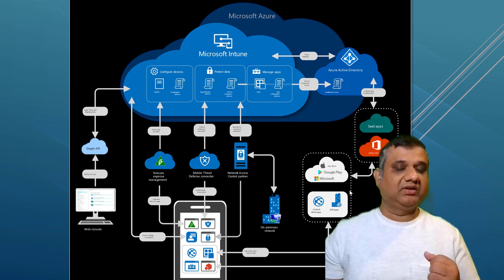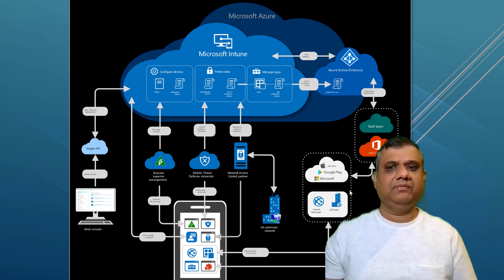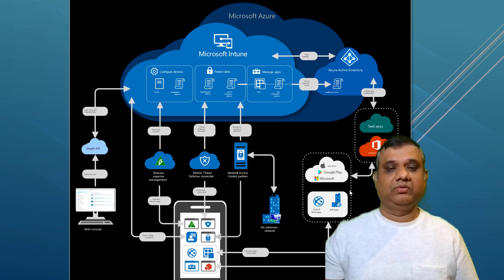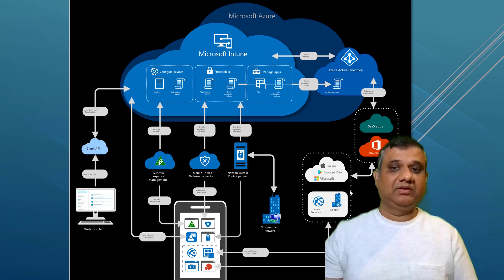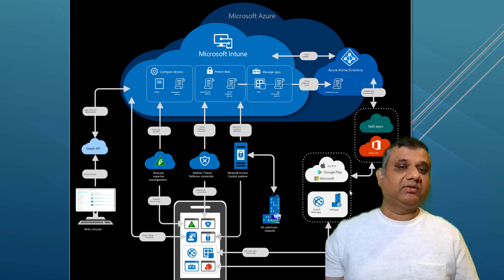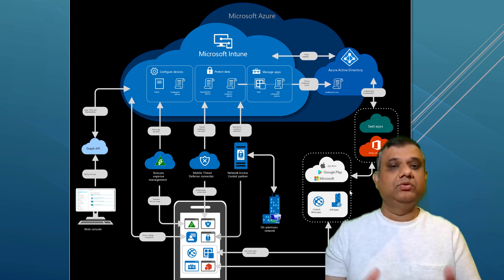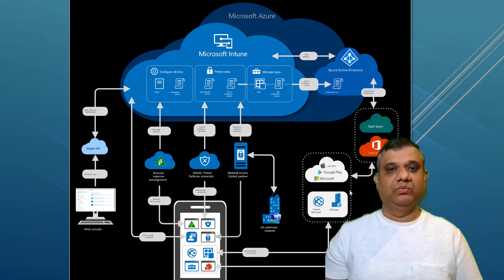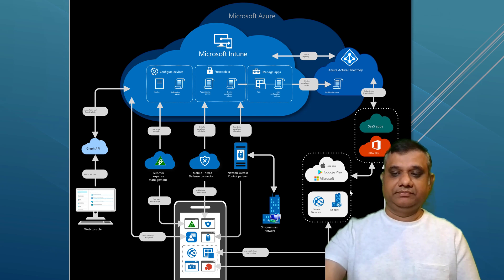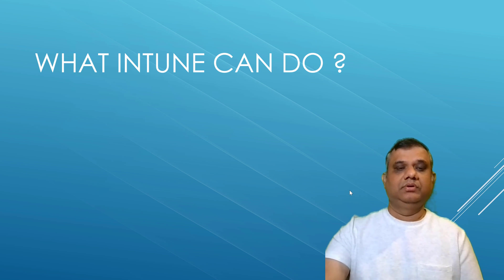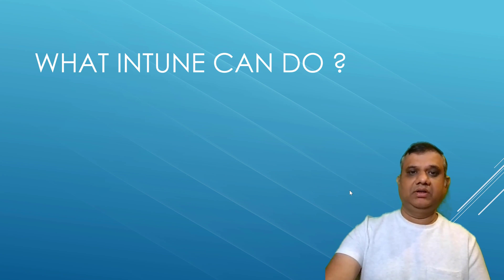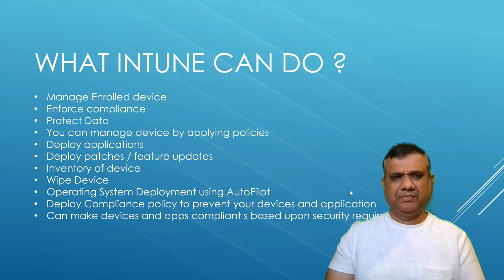When your Intune is fully configured, you can access it directly through the web console. On the left-hand side of the image, you can see that through the web console you can manage devices, deploy applications, configure application settings, and much more. Microsoft Intune also provides flexibility to deploy Win32-based applications, line-of-business applications, and SaaS-based applications like Office 365. Microsoft Intune doesn't come alone — you can integrate it with your existing environment.